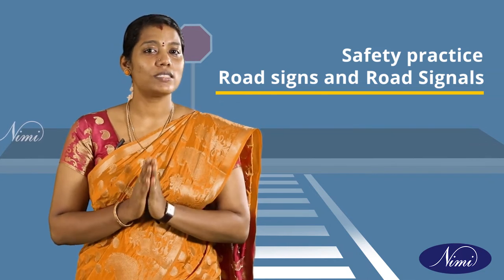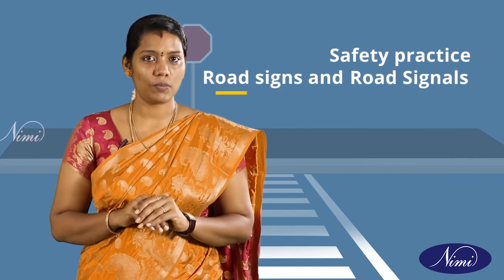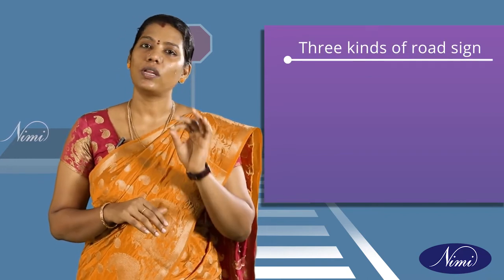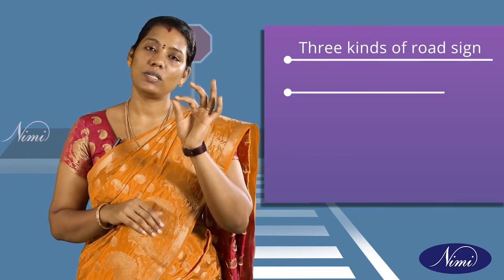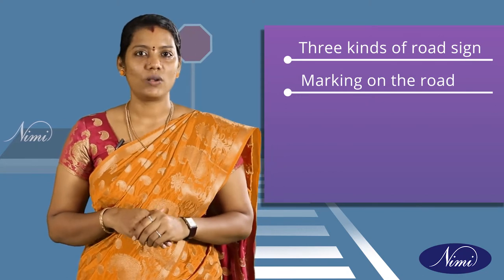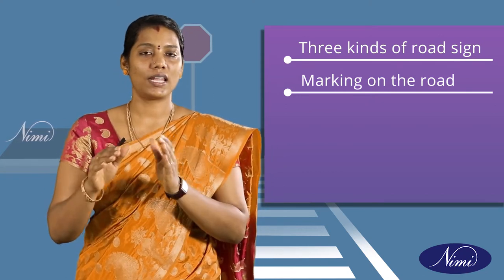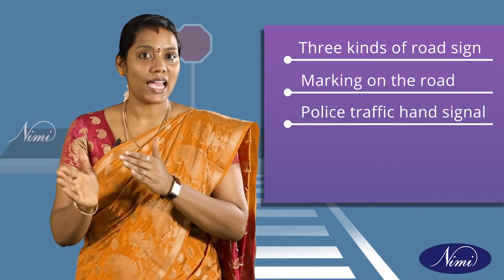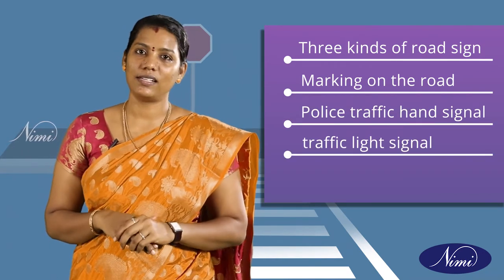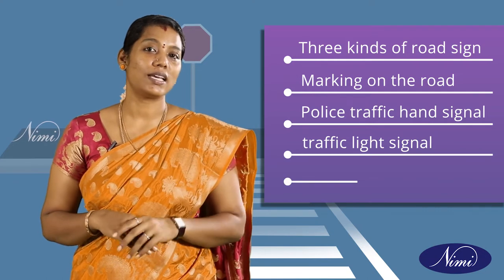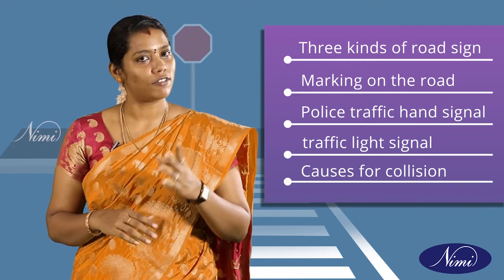At the end of this class you shall be able to list out the important three kinds of road signs, describe the markings on roads, describe the traffic police hand signals and lighting signals, and also list out the causes of collisions.